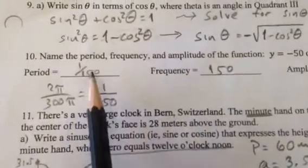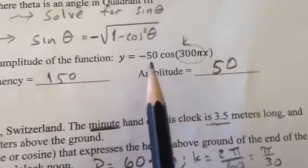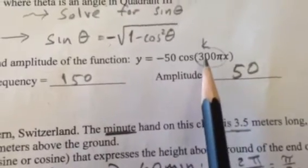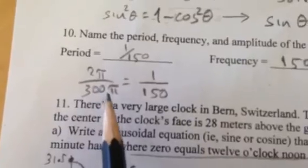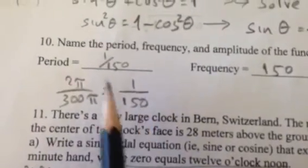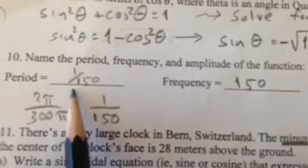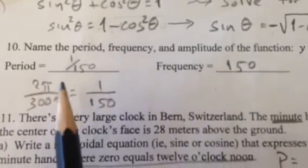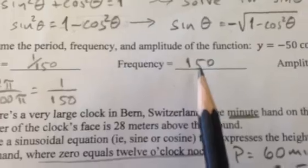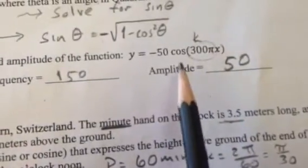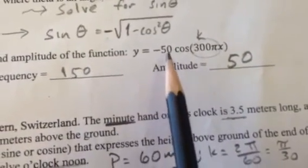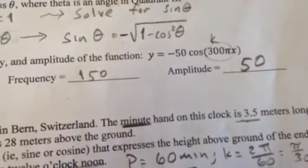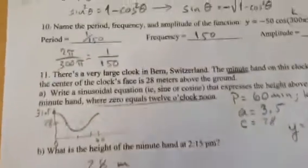Next problem. Name period, frequency, and altitude for this function. There's k, 300pi. Well, 2pi over 300pi is the same as 1 over 150. So that's the period. That's how long one cycle is, 1/150. The frequency is the reciprocal of that. So that makes 150. That's pretty easy. Amplitude is just the number right there. And it's always positive. So the amplitude is 50.